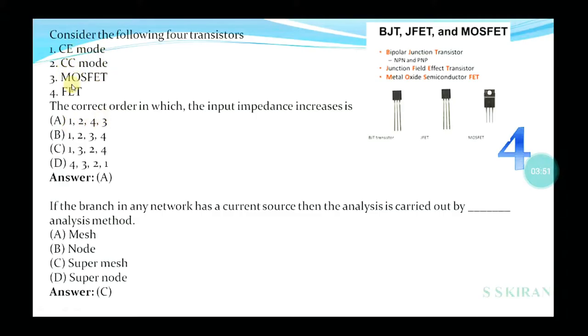Consider the following four transistors: common emitter mode, common collector mode, MOSFET, FET. The correct order in which the input characteristics increase: first is CE, then CC, then FET, then MOSFET. Yes, option is A, 1-2-4-3. This type of question you can expect in UGC NET.